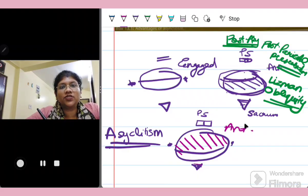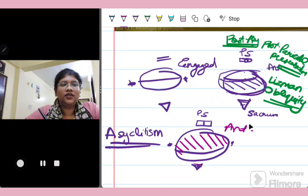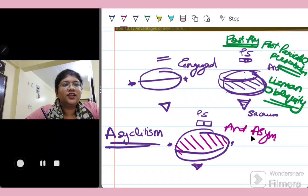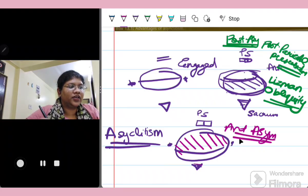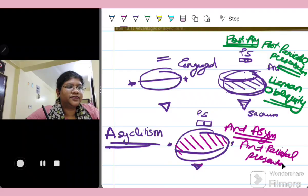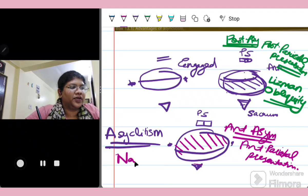Remember, the anterior or the posterior is defined or named according to the part of the parietal bone which is more prominent. This is known as the anterior asynclitism. Also known as the anterior parietal presentation. This has also been given a special name and is known as the Naegele's obliquity.